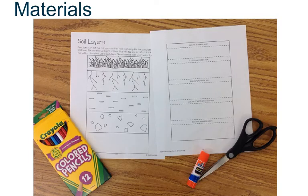So here's what you're going to need. You're going to need a copy of each of the different pages for your soil layers foldable, as well as colored pencils, a glue stick, and scissors. Make sure you have all those materials available to you now.